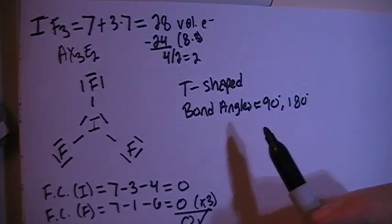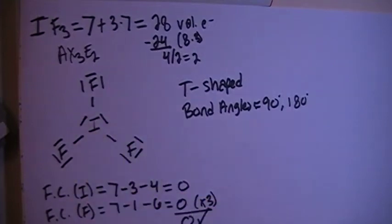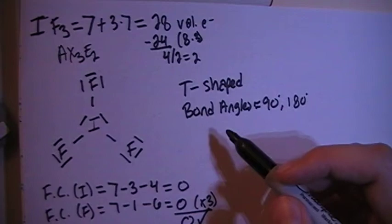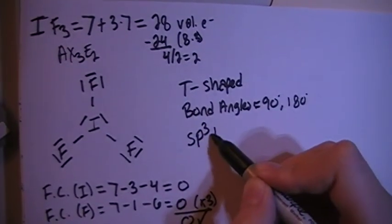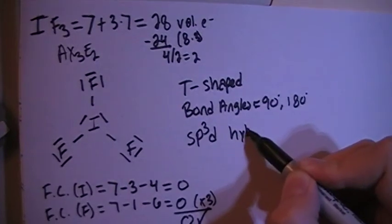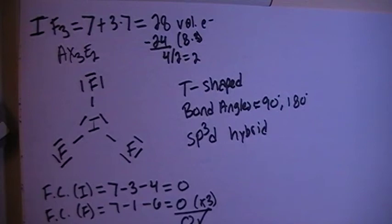In terms of hybridization, looking at the central atom, we have 1, 2, 3, 4, 5 electron groups or possible bonding sites, so we need 5 hybrid orbitals, so that means we're going to need sp3d hybrid, 1s, 3p's, and 1d, so that's a total of 5 orbitals.